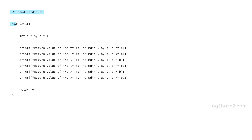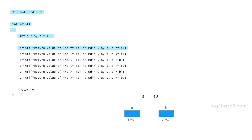Now let us see a program. In the main function, we are declaring two integer variables: a = 5 and b = 10. The first printf will print: 'return value of %d == %d is %d', where the first %d corresponds to a, the second to b, and the third to the expression a == b. Since 5 is not equal to 10, the third integer printed will be 0, so the output will be: 'return value of 5 == 10 is 0'.